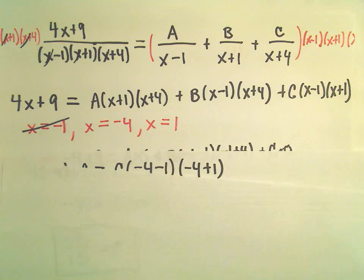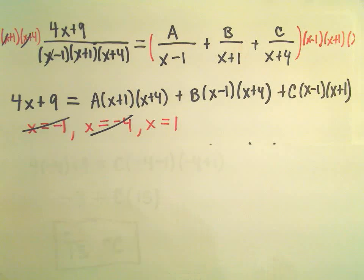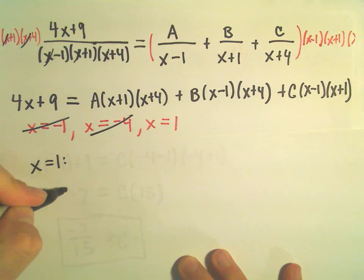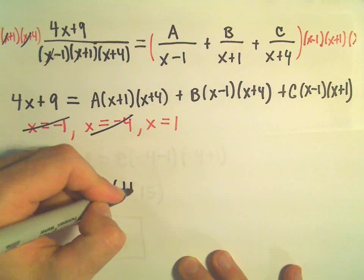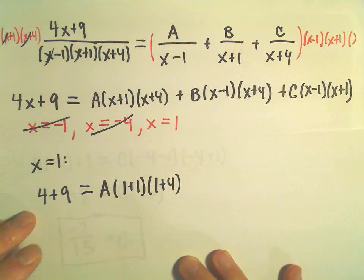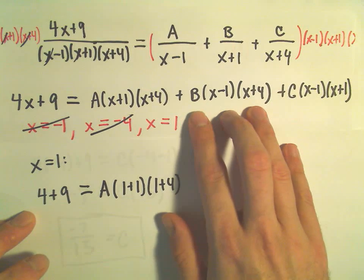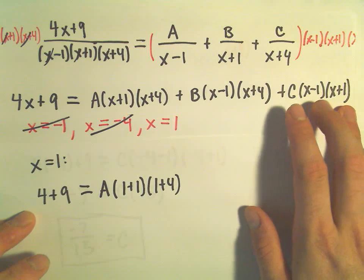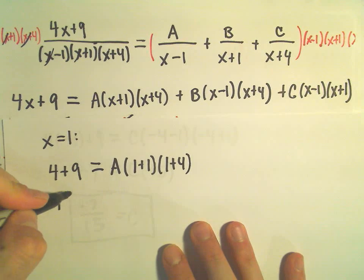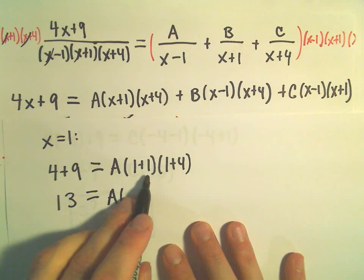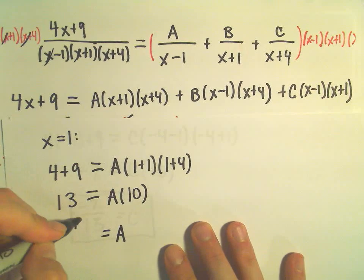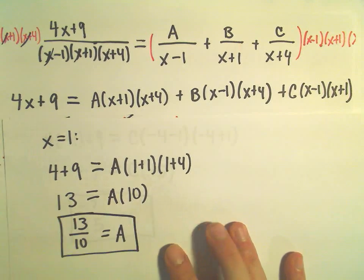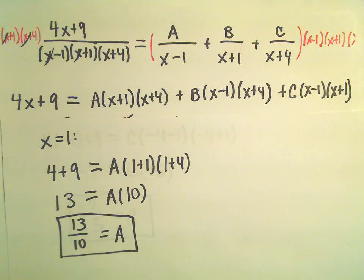Let's repeat this process one more time — I'm going to plug in x equals 1. On the left side we get 4 plus 9 equals 13. On the right side, the second and third terms go to zero, and we're left with A times (1 plus 1)(1 plus 4), which is A times 2 times 5 equals 10A. Dividing both sides gives us A equals 13 over 10. So now we've figured out all three constants: A, B, and C.